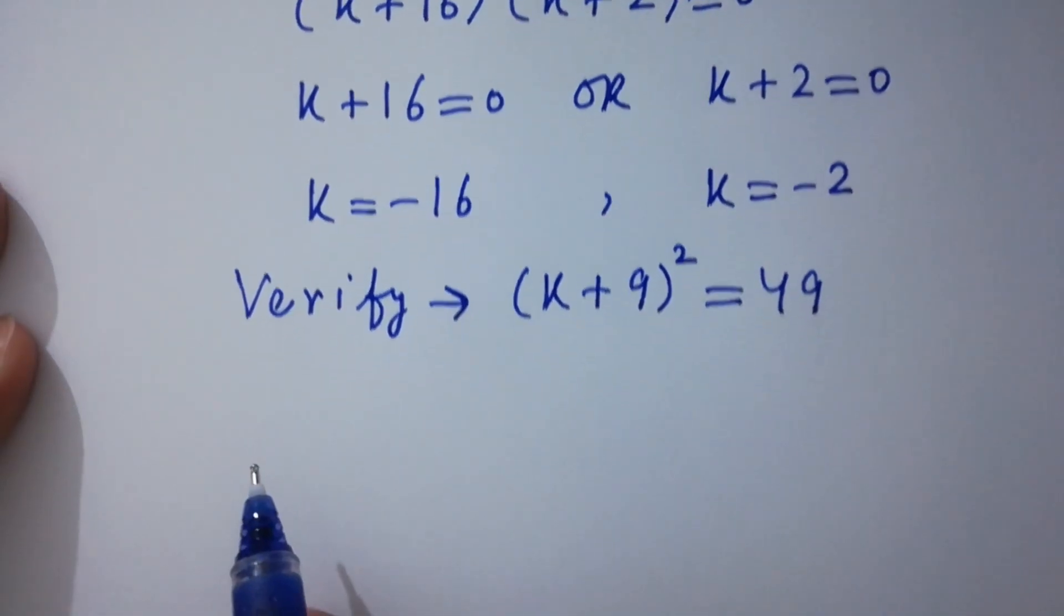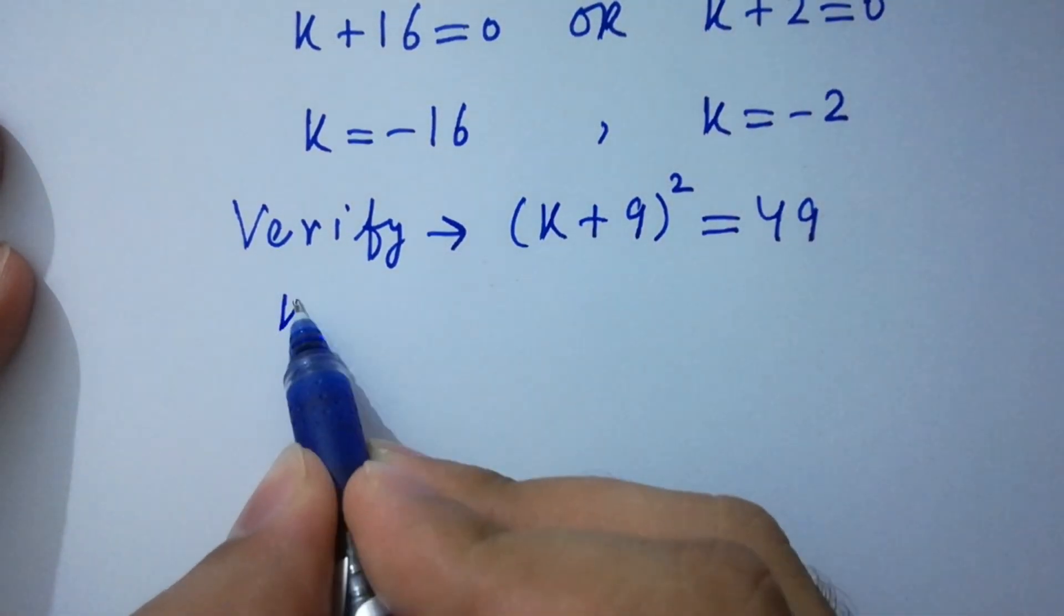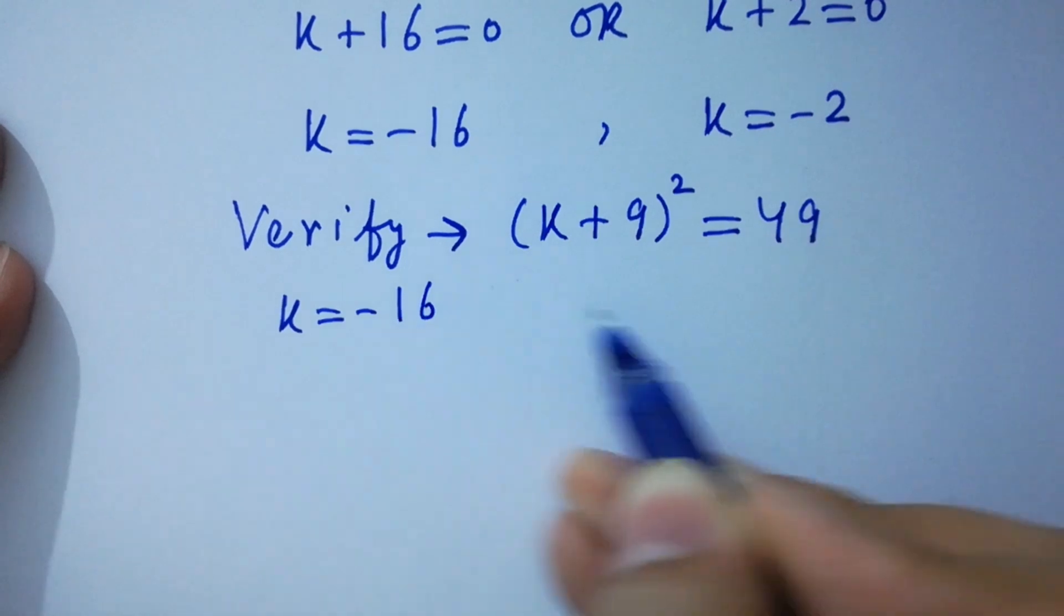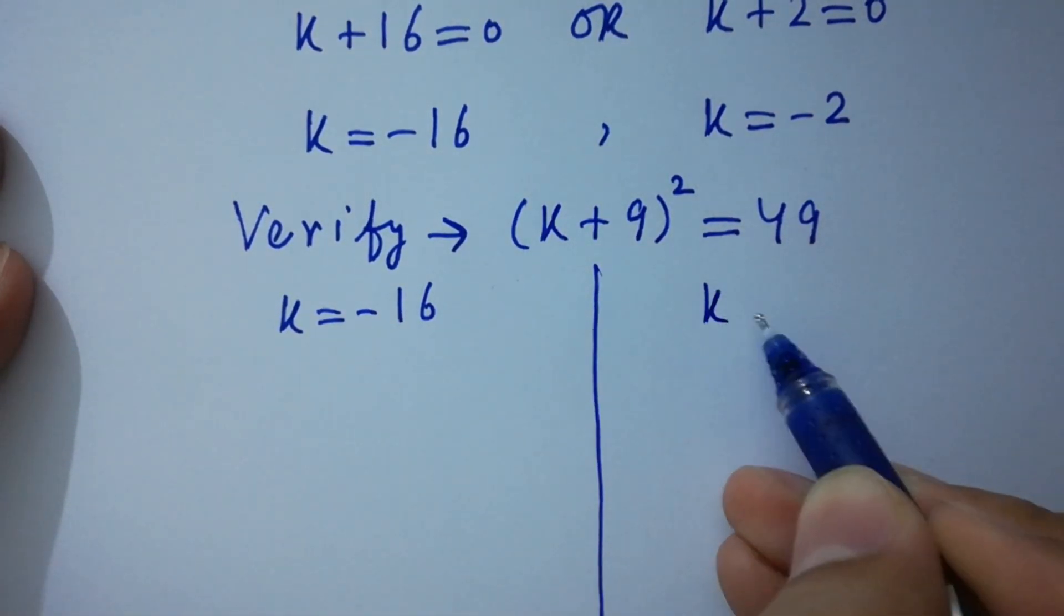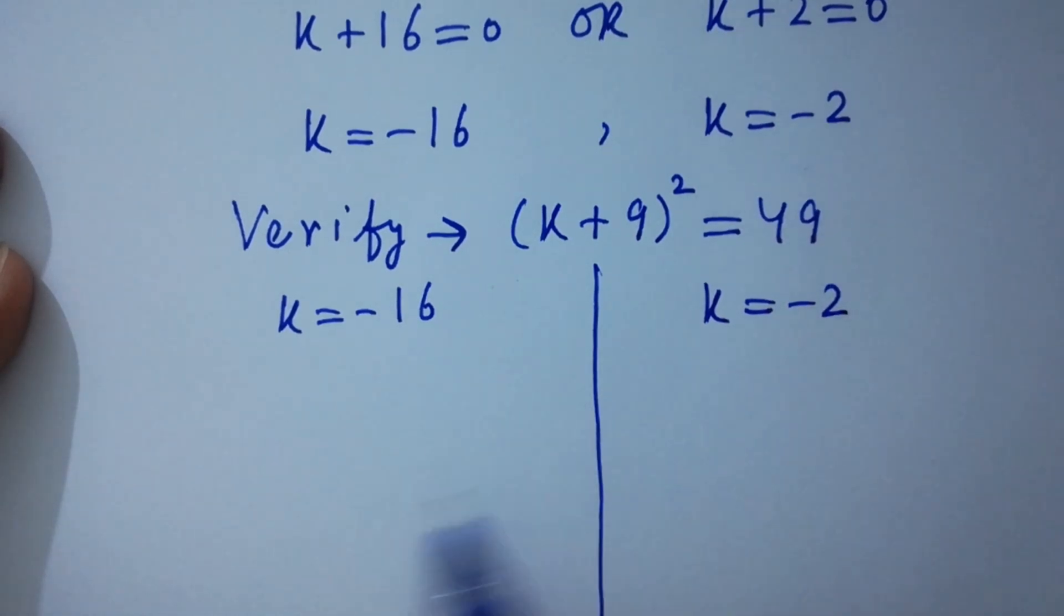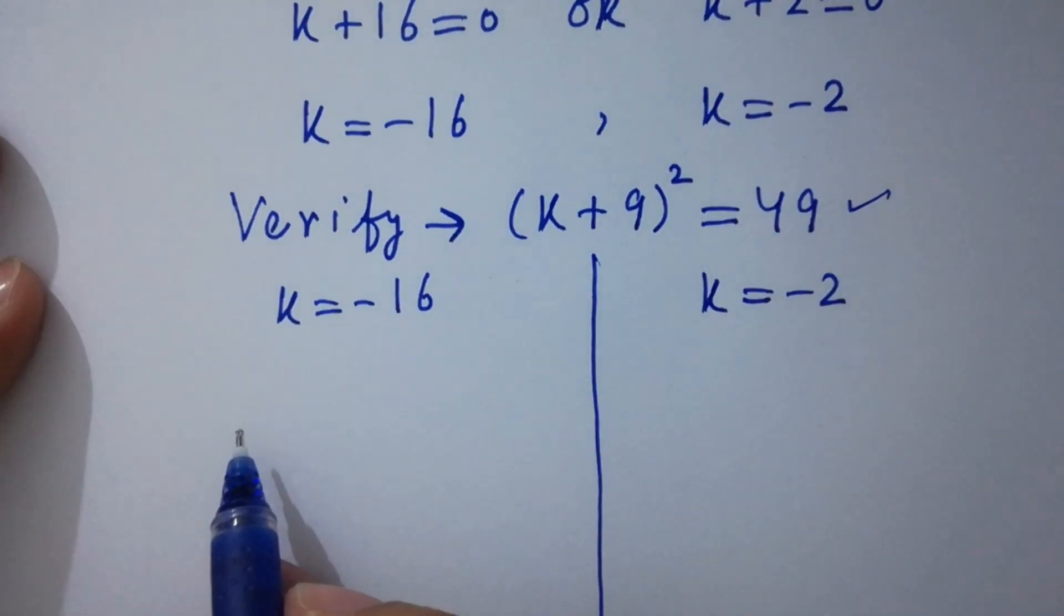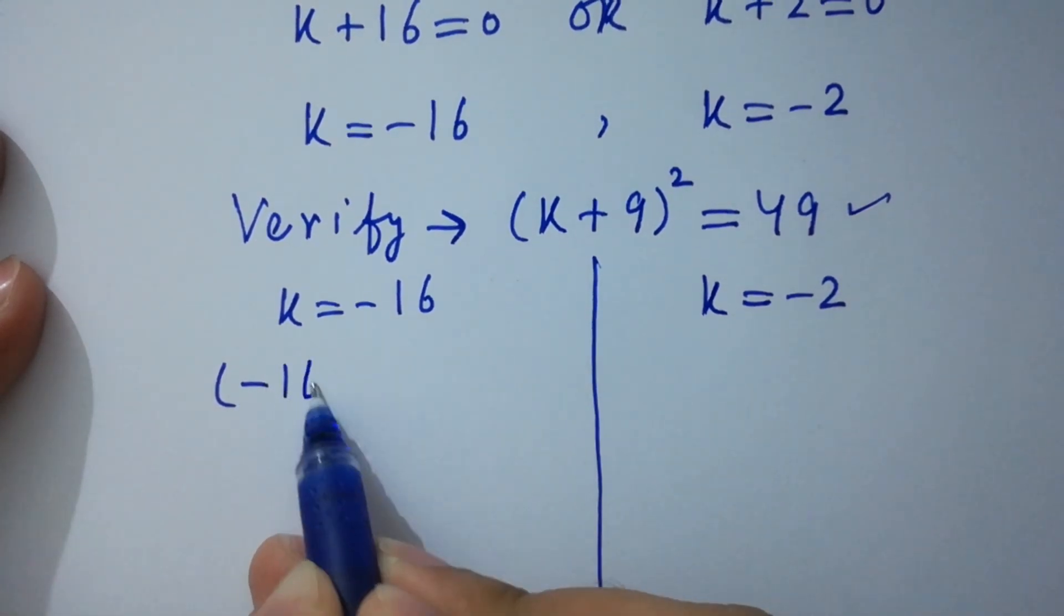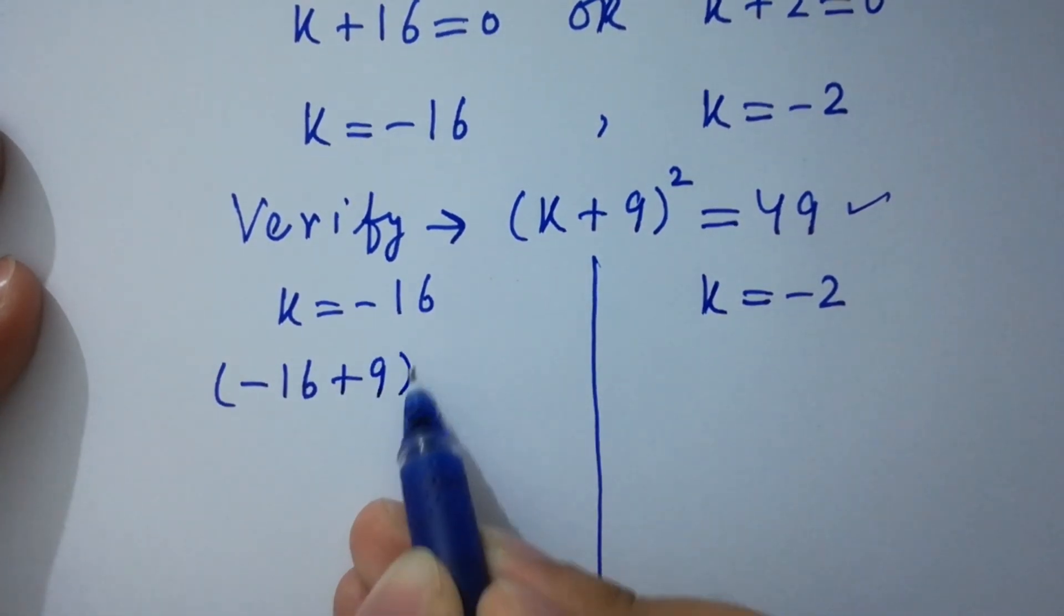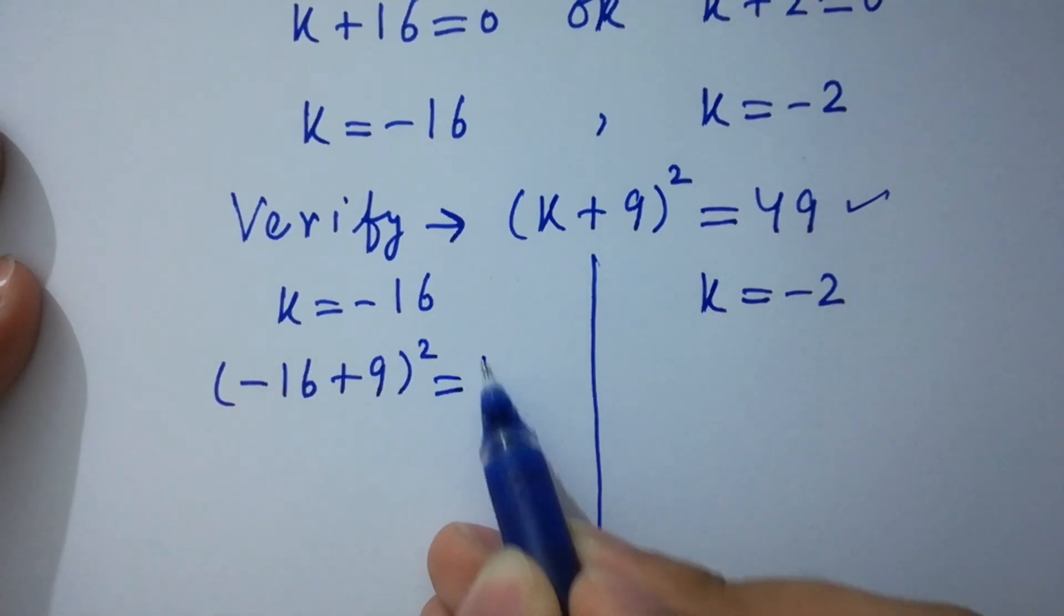Put the value of k equal to -16, and also put the value of k which is equal to -2. Into this, we have here (-16 + 9)² = 49.